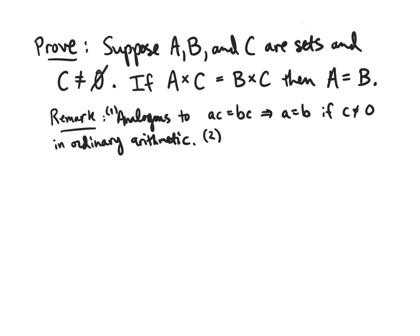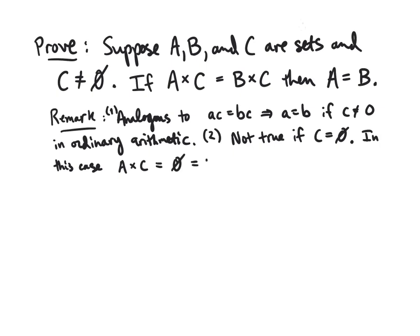This is not true if C equals the empty set, because then A×C = ∅ = B×C for any sets A and B. The Cartesian product of A and C consists of ordered pairs where the first component comes from A and the second from C; if C is empty there is no element to take, so the product is empty.